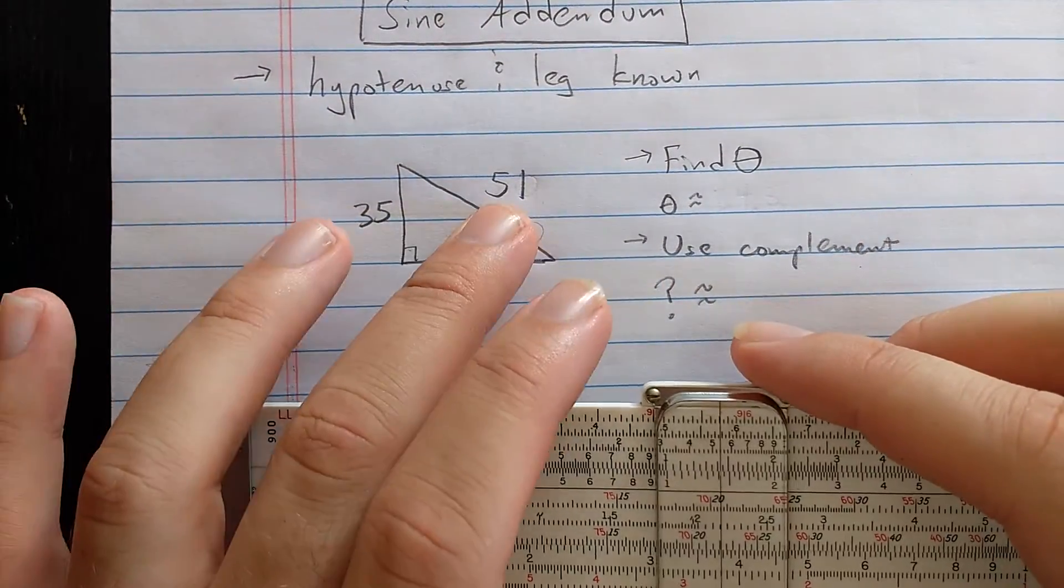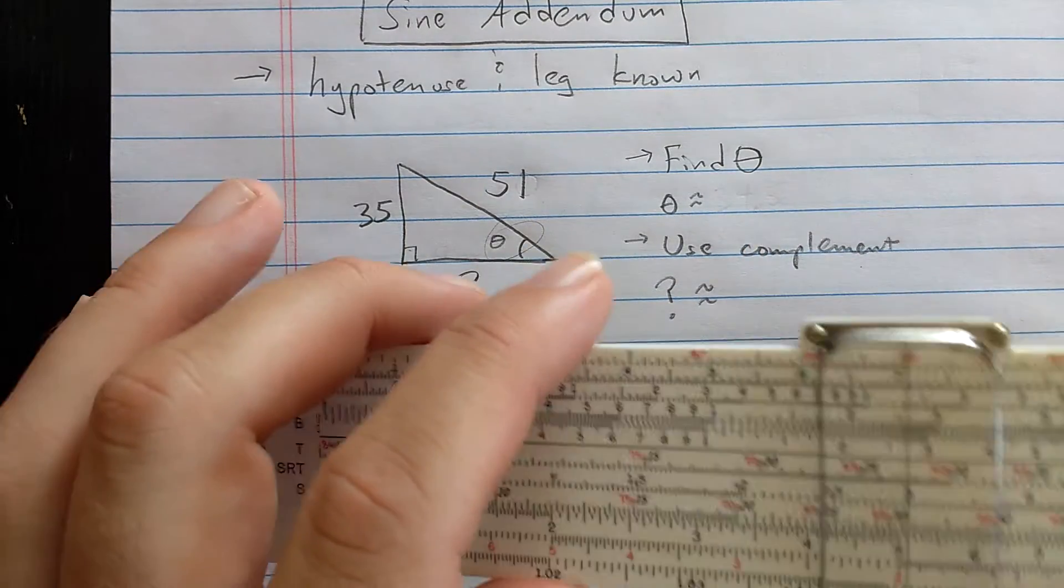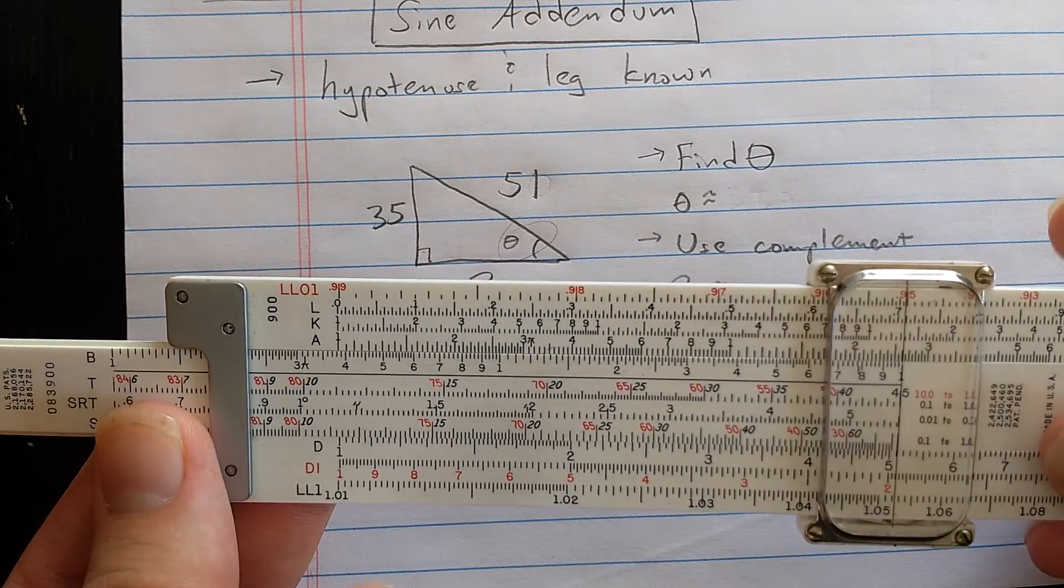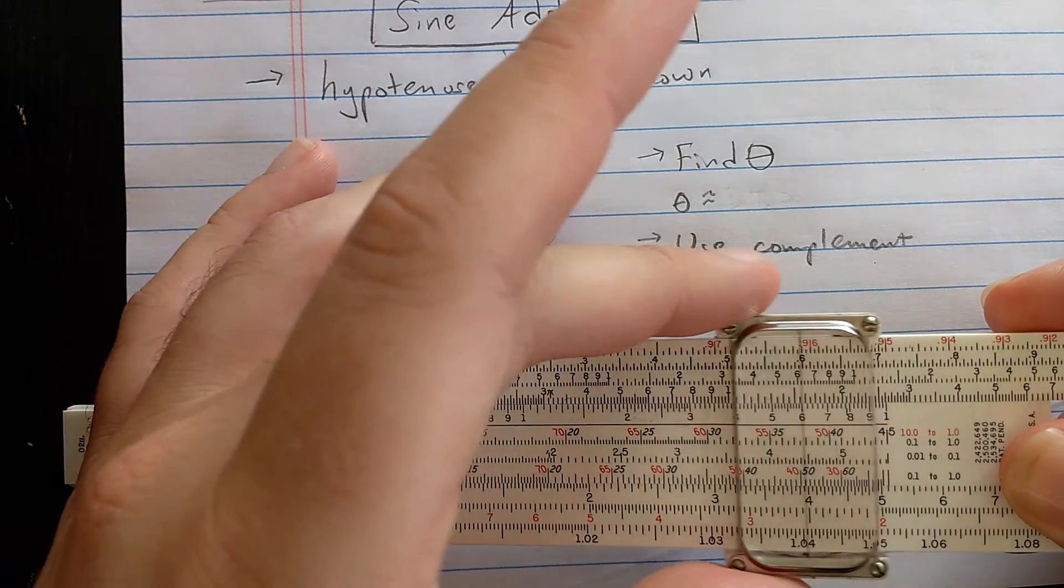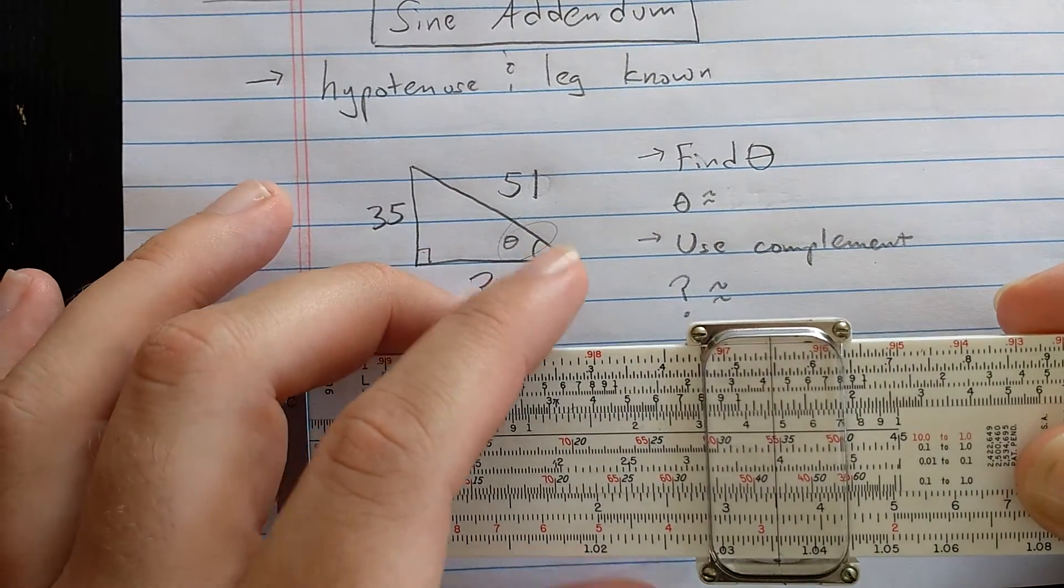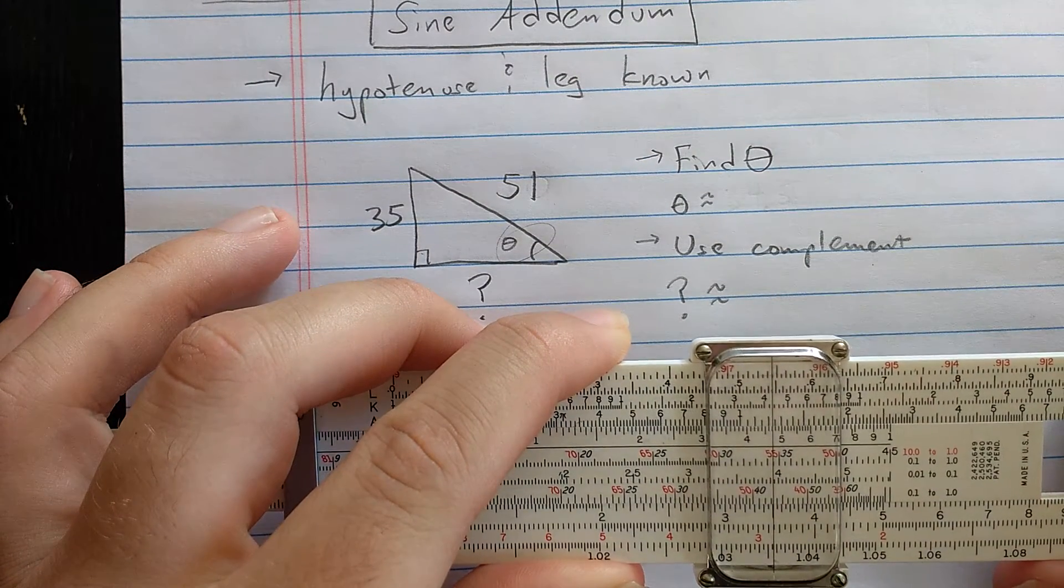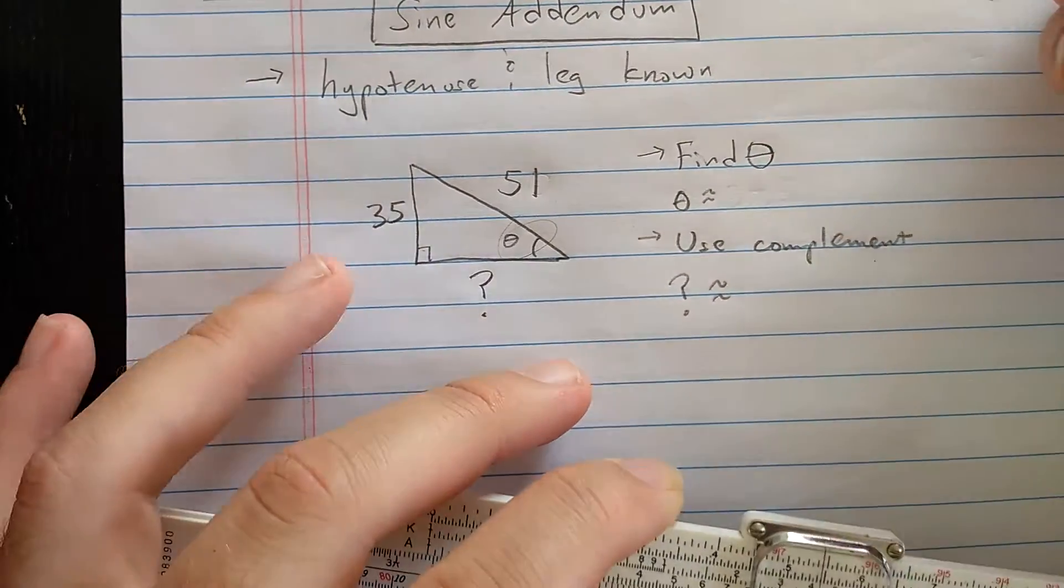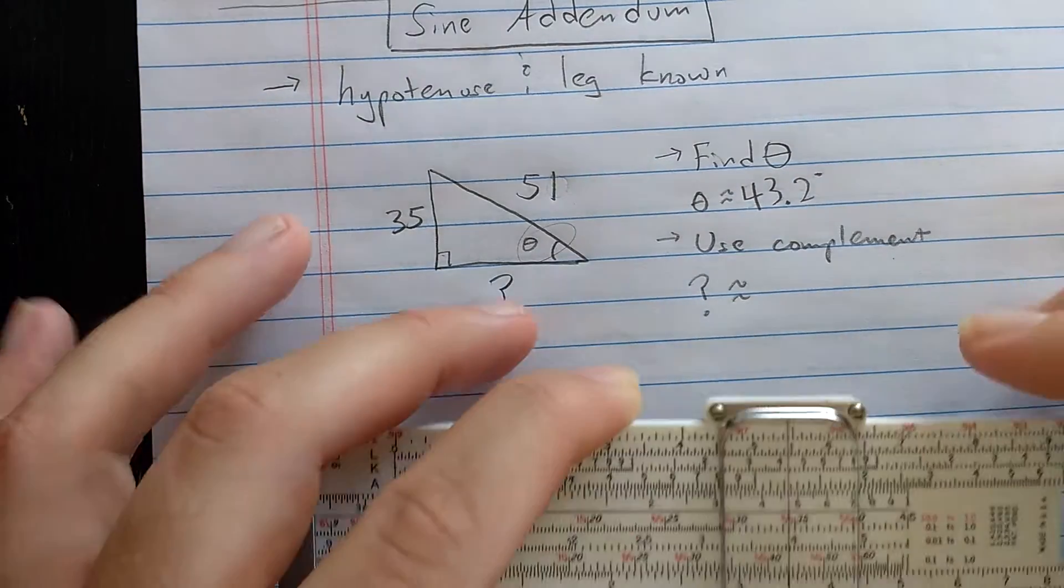What I'm going to do is set 51 with sine of 90, so the index of the S scale. Then I'm going to look for the 35. And what should be on the S scale is theta. Theta here looks like about 43.2 degrees or so.